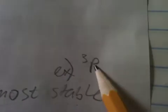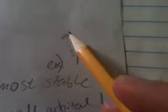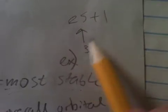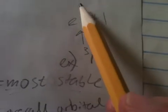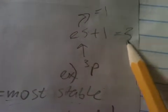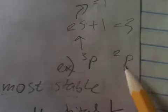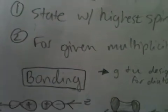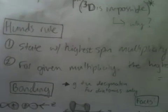So, an example is 3P. Remember, this came from 2S plus 1. So, in order to get a triplet, this would have had to have been equal to 1. That's how you get 3 here. This is more stable than that, for example. So, that's the first rule. The state with the highest spin multiplicity is the most stable.